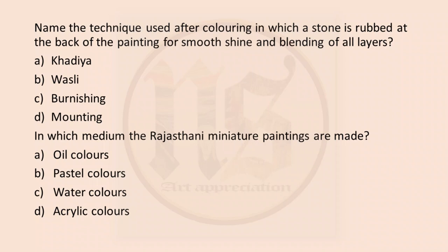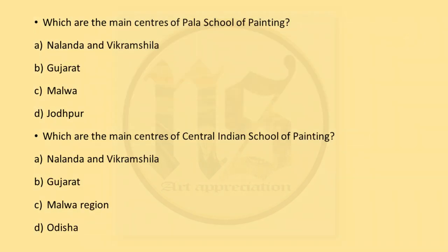Name the technique used after coloring in which a stone is rubbed at the back of the painting for smooth shine and blending of all layers. This is no longer part of your syllabus but since it is general knowledge, we can see it. Khadiya is the white pigment; Varsli is the name of the paper. Burnishing is the right answer because the statement describes that technique. Mounting is almost like framing. So C, burnishing is the correct answer. Next: in which medium are the Rajasthani miniature paintings made? The answer is watercolors, that is C. Which are the main centers of Pal School of Painting? Nalanda and Vikramshila is the right answer — Gujarat is for Jain school, Malwa is for Central Indian paintings, and Jodhpur is a Rajasthani sub-school. So our answer is A, Nalanda and Vikramshila.